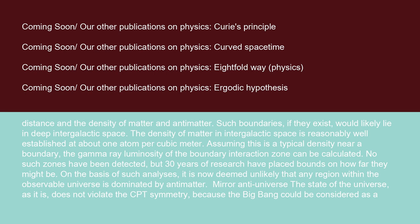The density of matter in intergalactic space is reasonably well established at about one atom per cubic meter. Assuming this is a typical density near a boundary, the gamma ray luminosity of the boundary interaction zone can be calculated. No such zones have been detected, but 30 years of research have placed bounds on how far they might be. On the basis of such analyses, it is now deemed unlikely that any region within the observable universe is dominated by antimatter.